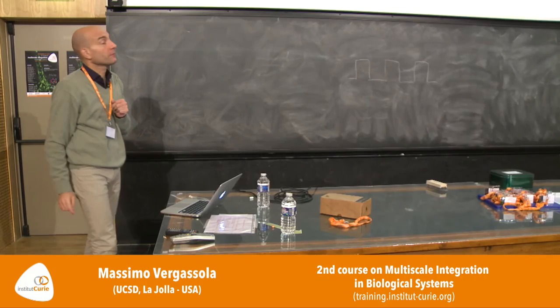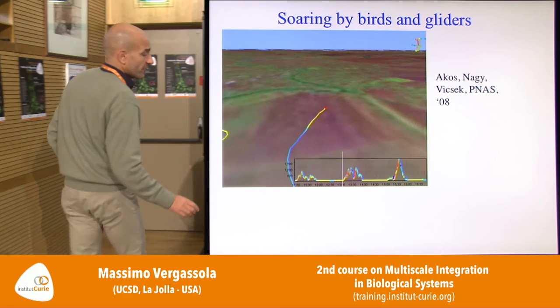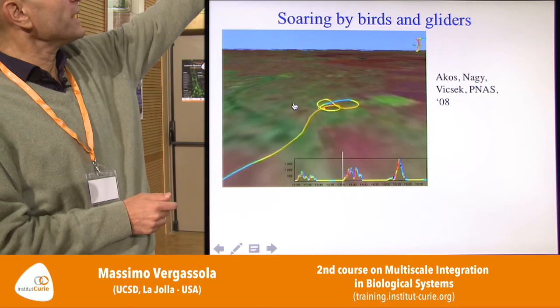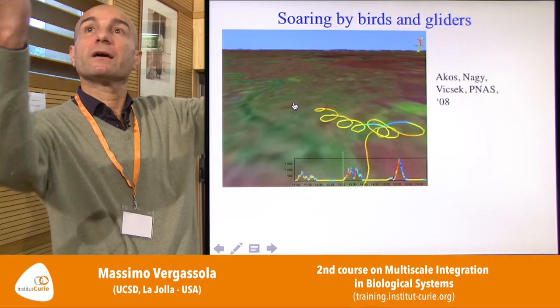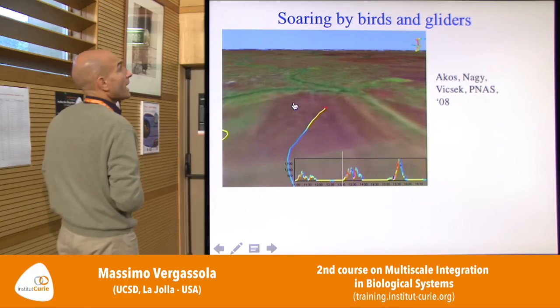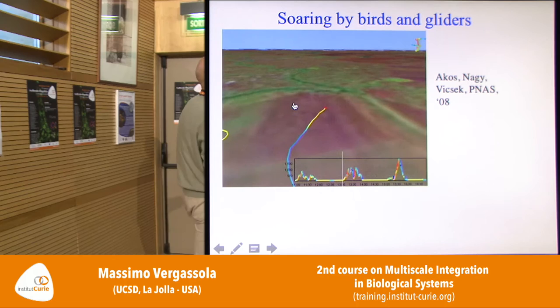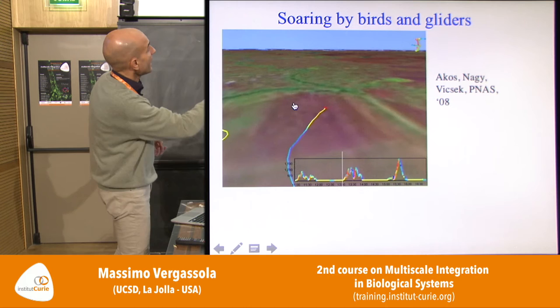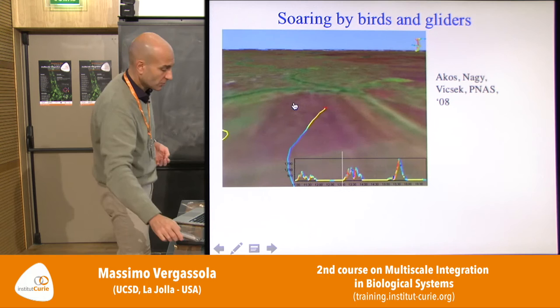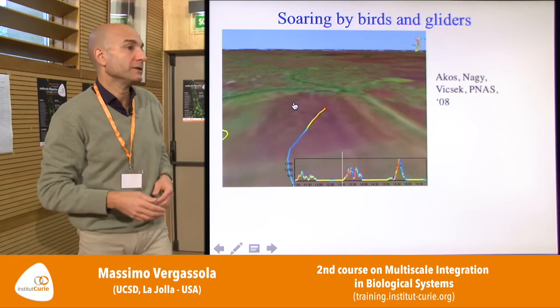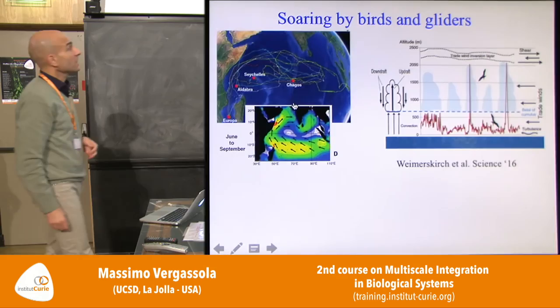That's the first part of the talk. Now let me discuss the second phenomenon: soaring. Here is a GPS track on a bird — a falcon — picking up an ascending current and spiraling around it. This was done by Bigsec and collaborators. The plot shows height as a function of time. The ascending current is called a thermal, because it's due to the ground being heated, creating a convective current going up.